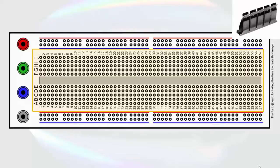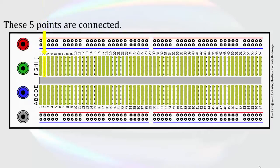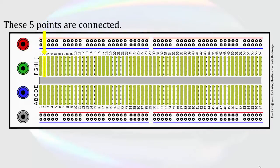In the center of the breadboard, there are groups of holes labeled with numbers and letters for reference. The clips behind those holes are arranged so that holes A through E in each of the numbered rows are connected, as are holes F through I. When we are building a circuit, we use each of these groups of 5 as a node.